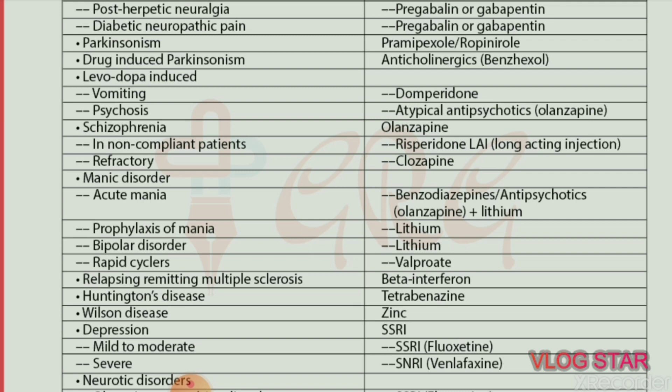Relapsing-remitting multiple sclerosis — drug of choice is beta interferon. Huntington's disease — drug of choice is tetrabenazine. Wilson's disease — drug of choice is zinc.